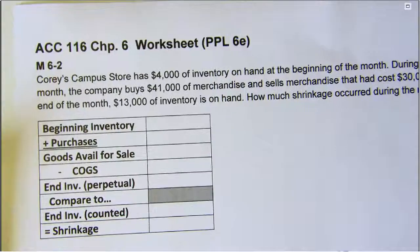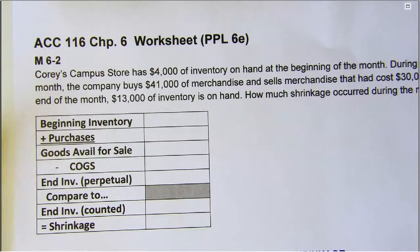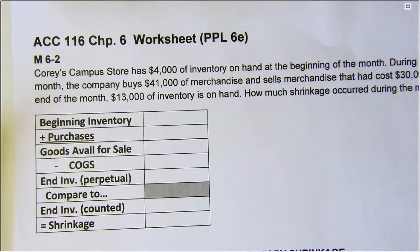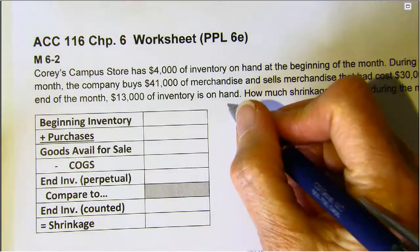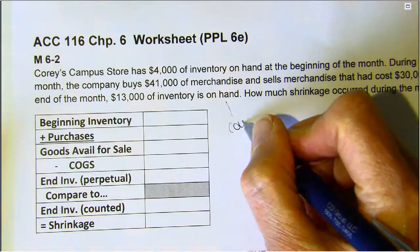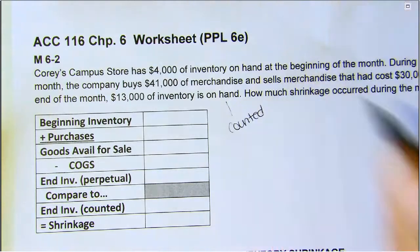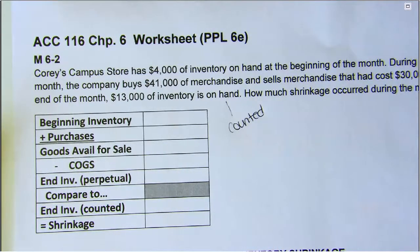Let's take a look at the top one. Cory's Campus Store has $4,000 of inventory on hand at the beginning of the month. During the month the company buys $41,000 of merchandise and sells merchandise that had a cost of $30,000. At the end of the month $13,000 of inventory is on hand — that means they counted it. How much shrinkage occurred during the month?